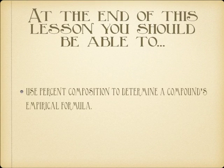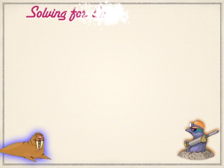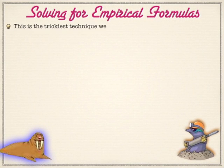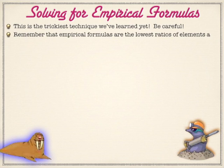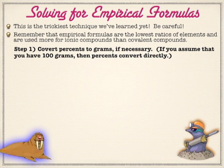It's a very straightforward technique and really shouldn't take that long to do. There are some common pitfalls here, and I will point those out where we run into them because I've seen a lot of students make these mistakes. We're going to be looking for the lowest ratio. You're going to be given percents most of the time, and the easiest way to deal with the percents is just pretend that you have 100 grams, because then it's a direct one-to-one conversion from percents to grams.